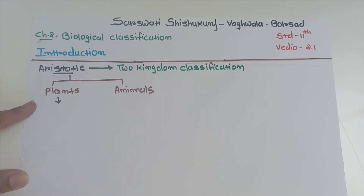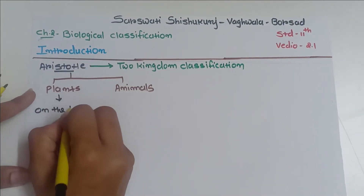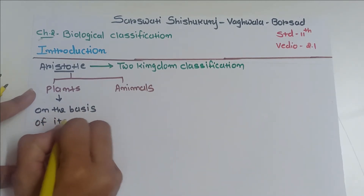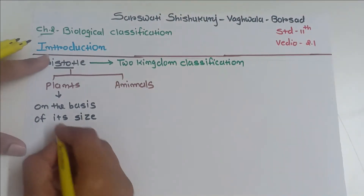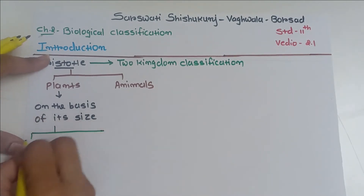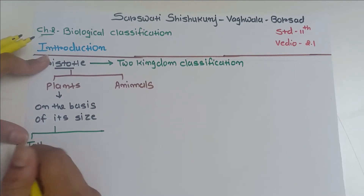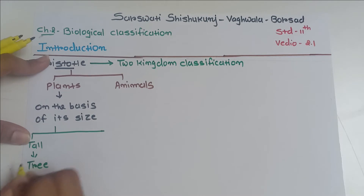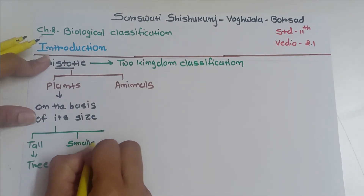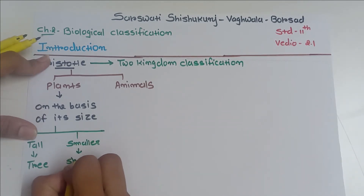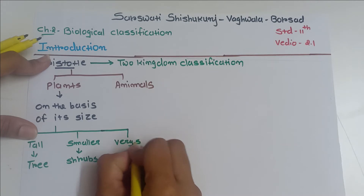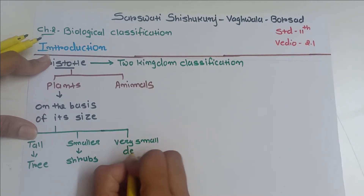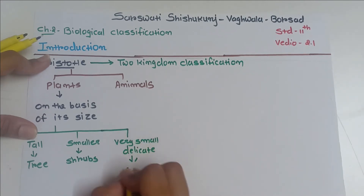In the plant kingdom, Aristotle included all unicellular and multicellular plants, and he further classified them on the basis of size. Very tall plants were included in trees, smaller plants were included in shrubs, and very small and delicate plants were known as herbs.